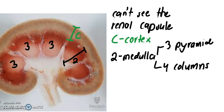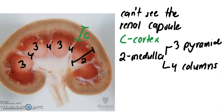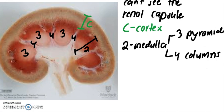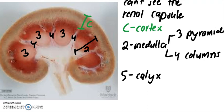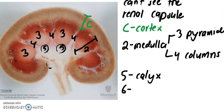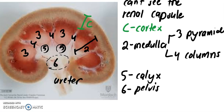The renal columns are where our arteries are going to go through. So here is a renal column, there's a column, and so forth. Next we have the major and minor calyces. The minors converge into majors. After that, this general region where all the calyces converge is the renal pelvis. And lastly, this is the ureter. See you in the next video.